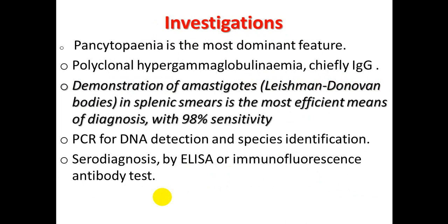For investigation, splenomegaly is the most common feature. Polyclonal hypergammaglobulinemia, chiefly IgG, is notable. Demonstration of amastigoids — Leishman-Donovan bodies — in splenic smear is the most efficient means of diagnosis with 98% sensitivity. PCR is used for DNA detection and species identification.